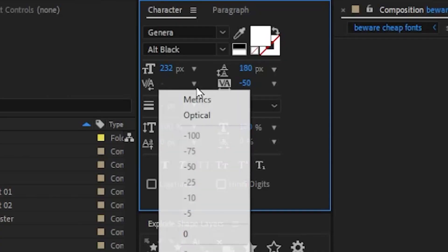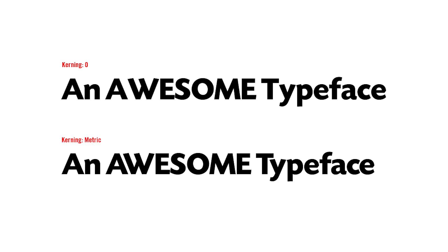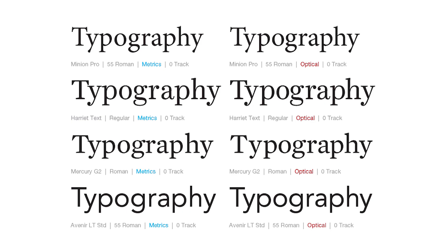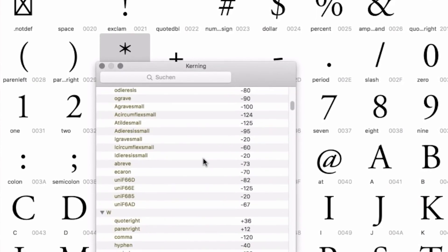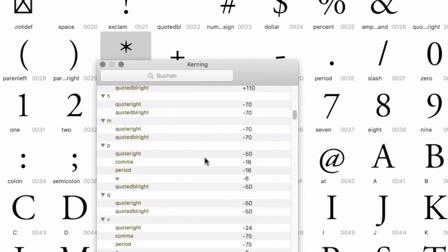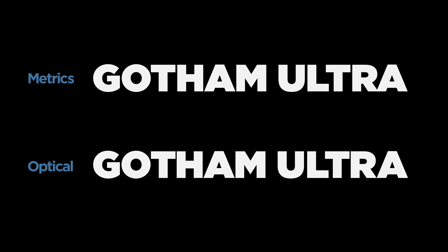There are essentially 3 types of kerning. Zero — this ignores kerning pairs and is probably best avoided. What are kerning pairs? Metrics uses kerning which is built into the font. Theoretically the font designer will have looked at hundreds and possibly thousands of letter combinations and built those values into the font. So if you choose Metrics, you're seeing the font the way the font designer intended.